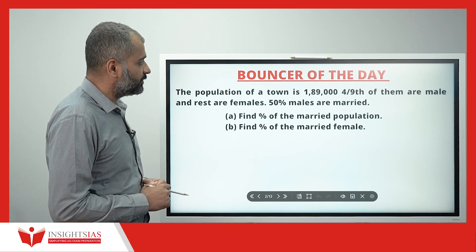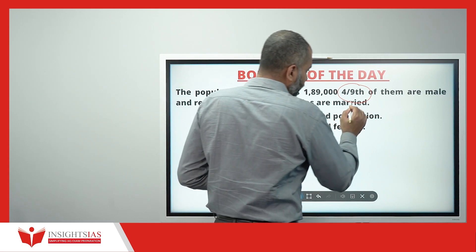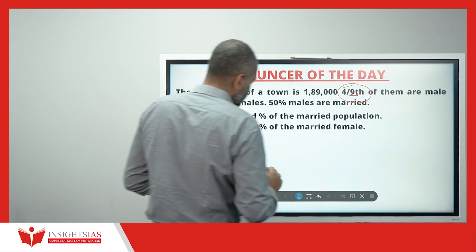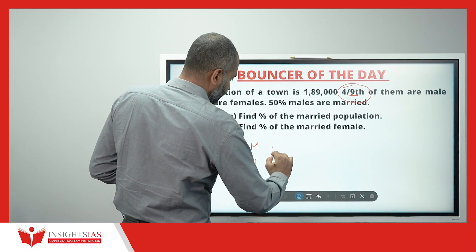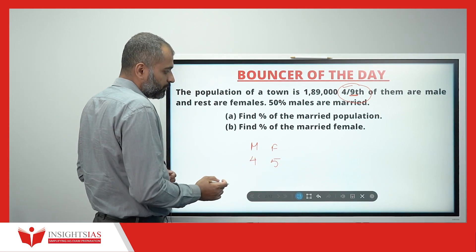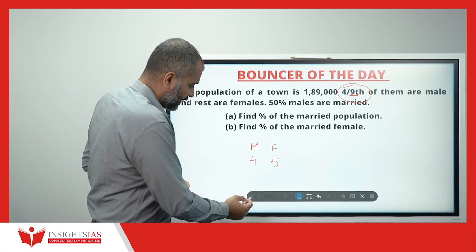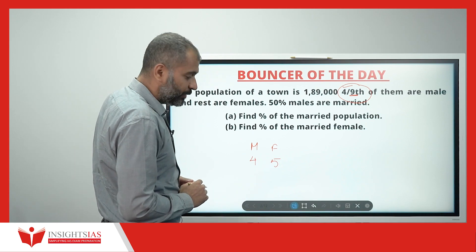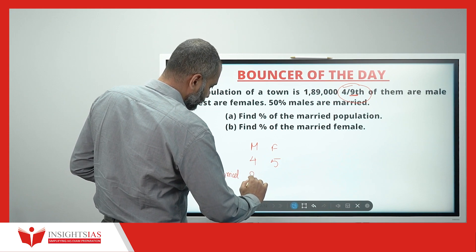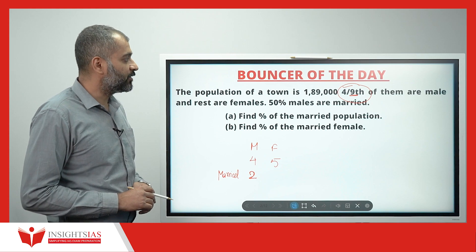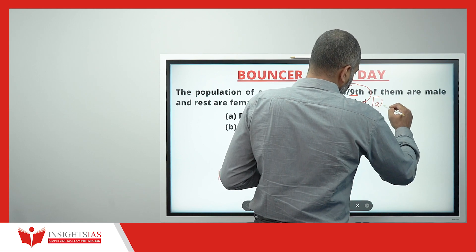Now the bonus question: the population of a town is 1,89,000, of which 4/9 are males. Out of 9 people, 4 are males and 5 are females. 50% of males are married, so out of 4 males, 2 are married.